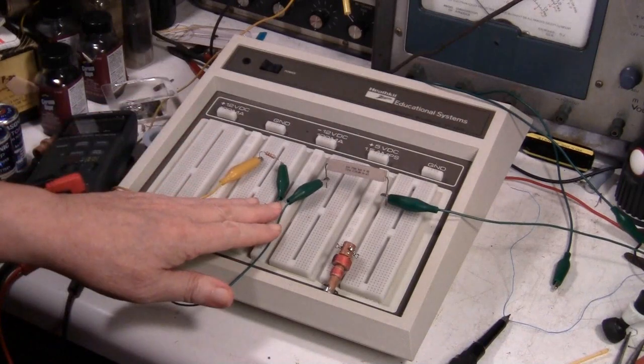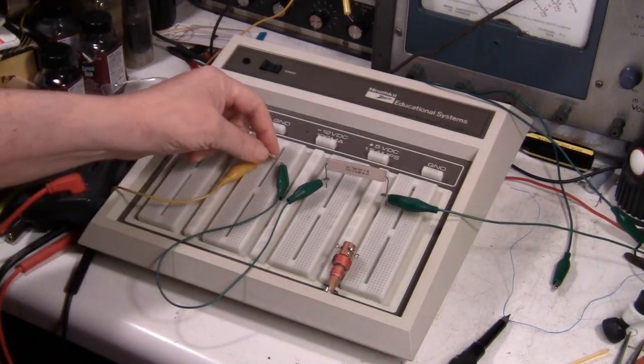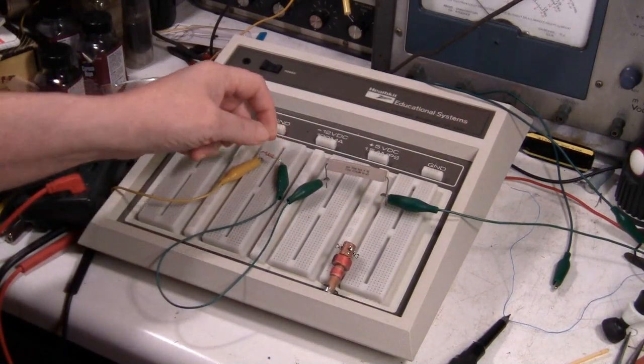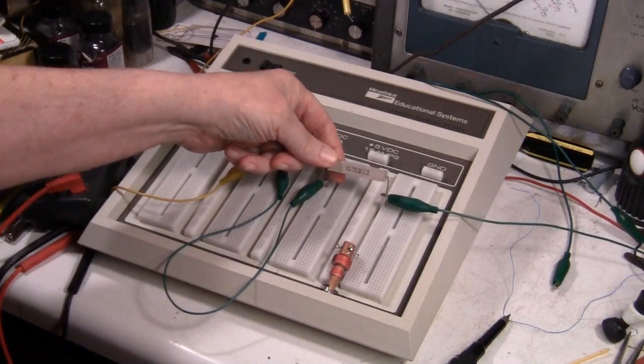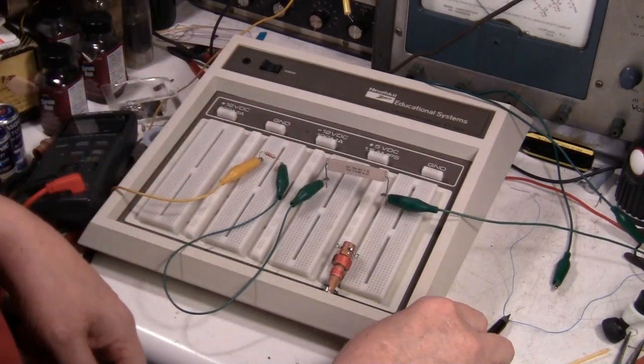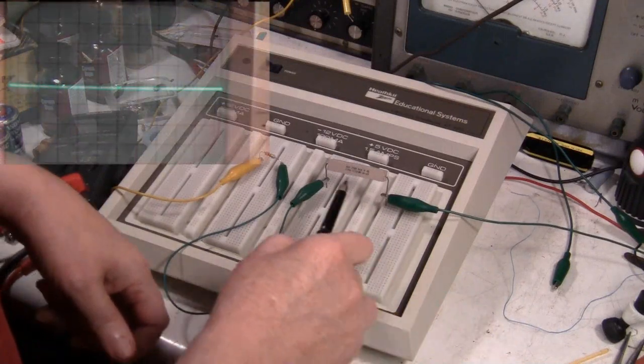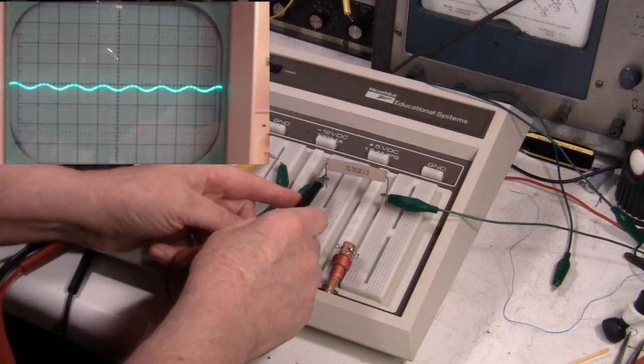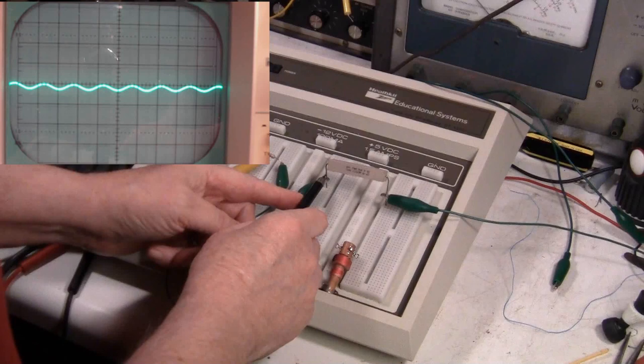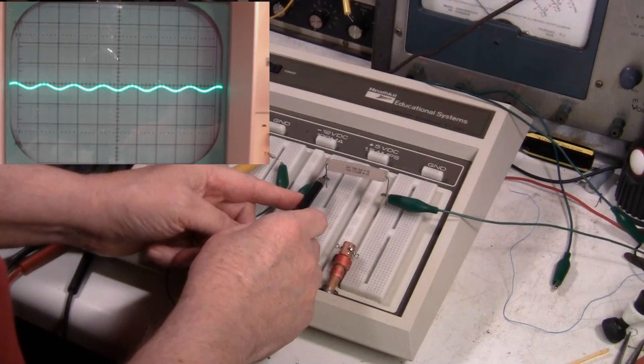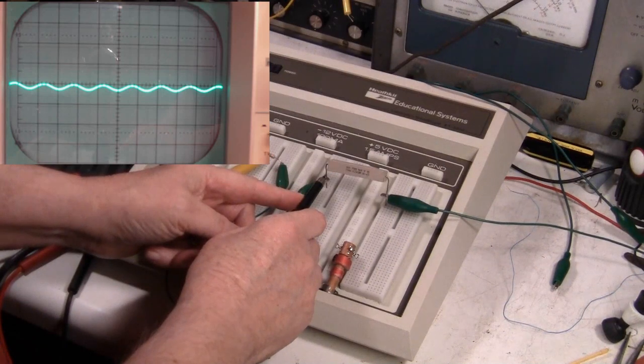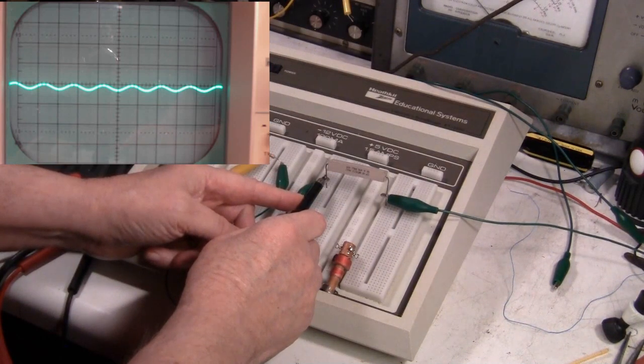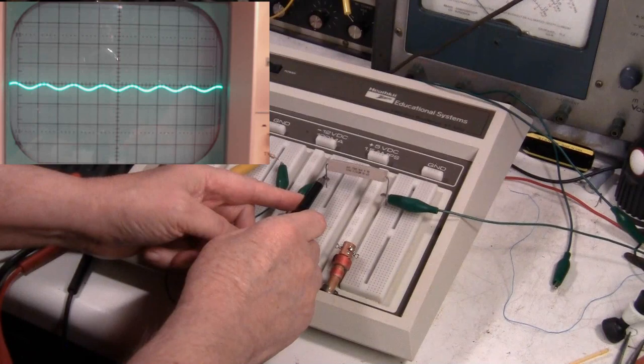Okay here's the first setup. Got a 1,000 ohm load resistor and here's our 50 ohm resistor. Now when I put the scope on it we can see that there's not too much RF there but what's actually happening is that it's being shorted out.